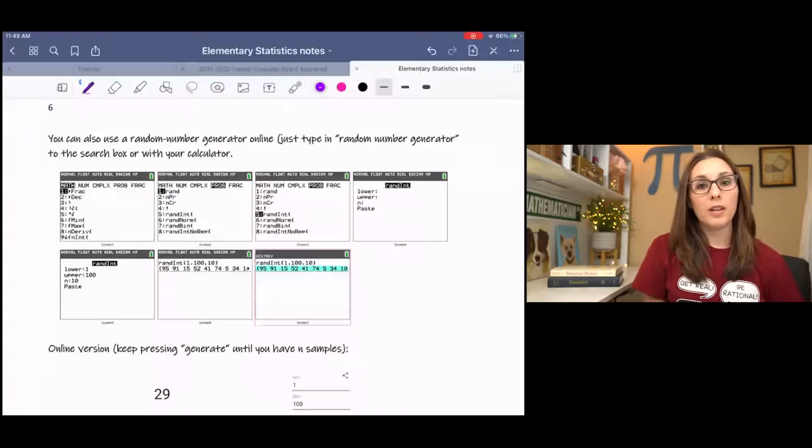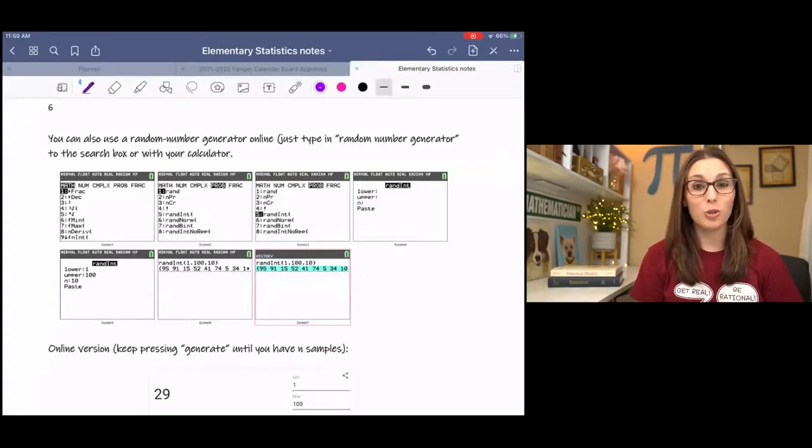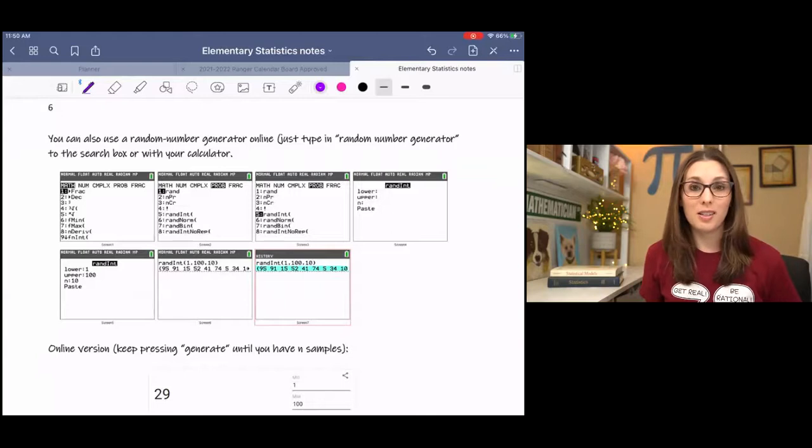We saw in the last video how long it took to use the random number table. And while the random number table is a tried and true way to get a random sample, it is a little time consuming and we don't always have a random number table with us. We can usually pretty much find a calculator or have a phone where we can access the internet.